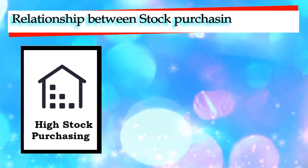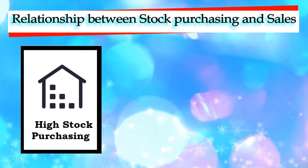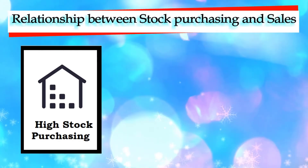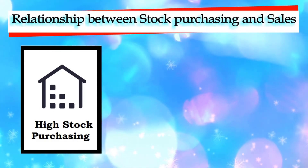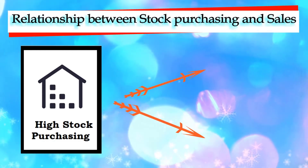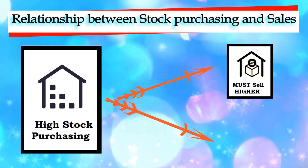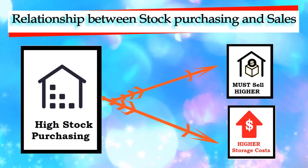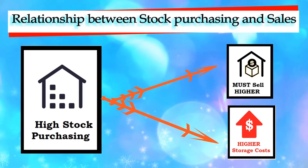Inventory turnover depends on two key business operations: stock purchasing and sales. Stock purchasing is, of course, how much inventory your business purchases throughout the year. If you are purchasing higher inventory amounts during the year, it means your company will have to sell higher amounts just to match or improve inventory turnover. If your business fails to sell more stock, it will become vulnerable to higher storage costs.